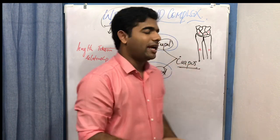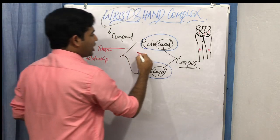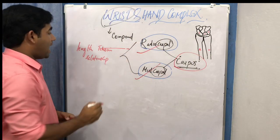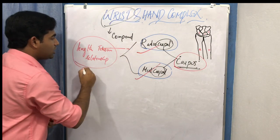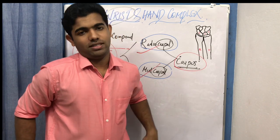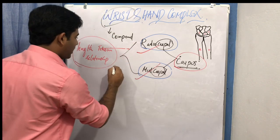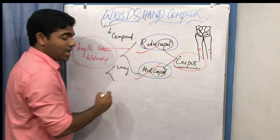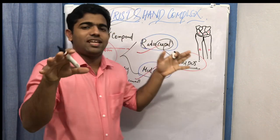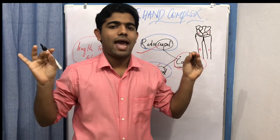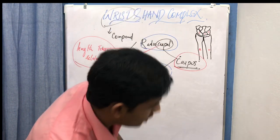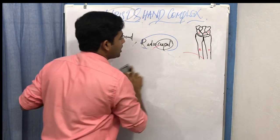So the wrist complex is made up of two joints: the radiocarpal joint and the midcarpal joint. The wrist complex can also be known as the carpus, and it has the very crucial function of maintaining the length-tension relationship of the forearm muscles. It can vary between individuals, and very small changes also produce significant changes in the function of the hand complex. Now let us move on to the radiocarpal joint.